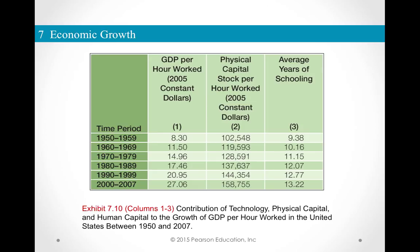All these numbers are increasing over this period. For example, average years of schooling: in 1950 to 1959 the average was 9.38 years, and in 2000 to 2007 it is 13.22 years. Compare this to countries like India or other developing economies where the average years of schooling was something like five or six years.